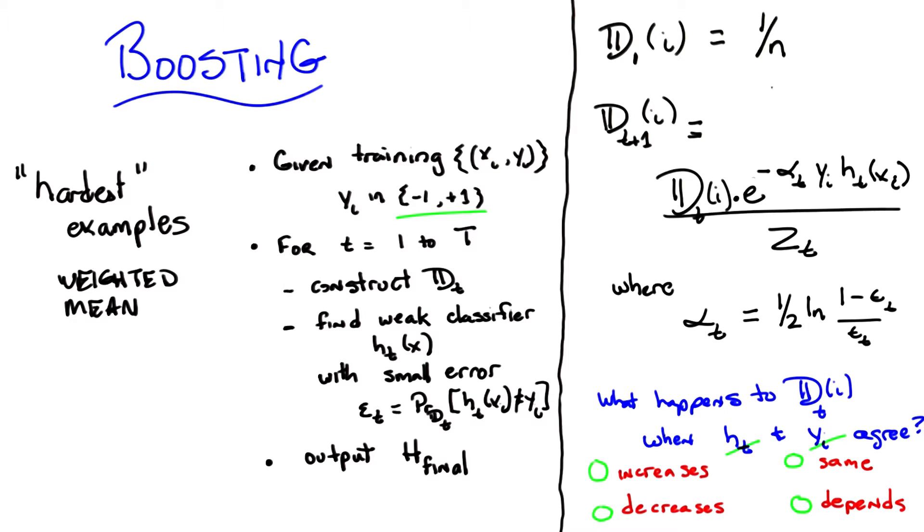e to the negative something is something between 0 and 1, less than 1. So that's going to scale it down.